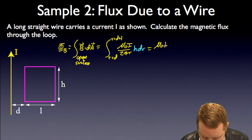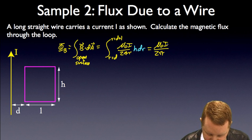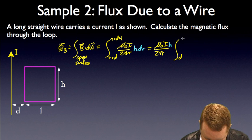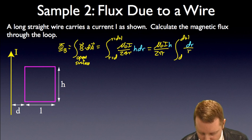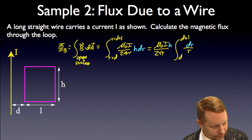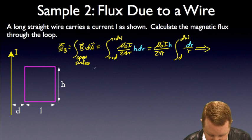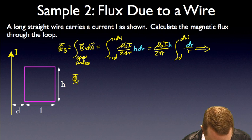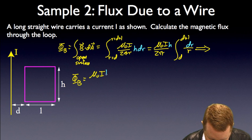Which we can pull the constants out of, so that will be μ₀I over 2π. h is a constant, so we can pull that out. Integral from R equals d to R equals d plus L, and that will leave us dR over R. And I know how to integrate dR over R. That's of the form integral dU over U, which is the natural log.